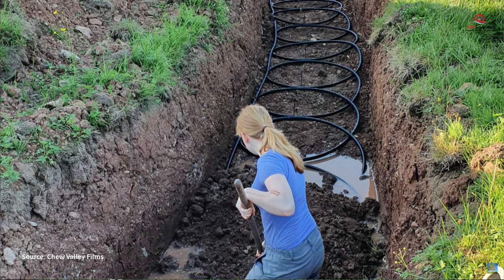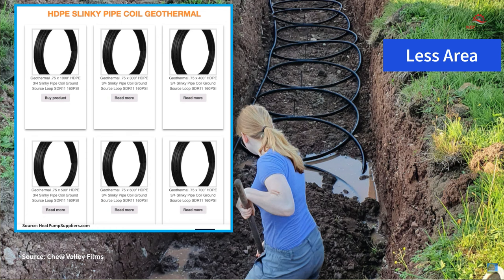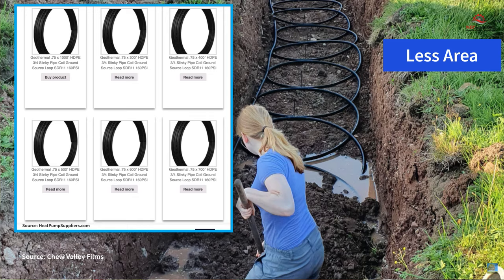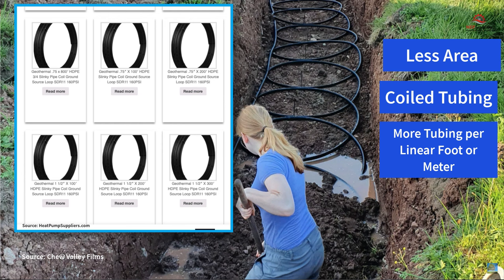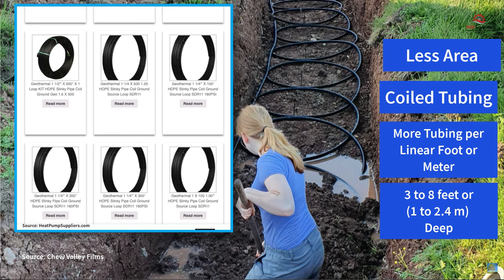The Slinky Geothermal Loop Installation: This geothermal system uses coiled tubing which allows for the use of less area by increasing the heat transferability per area used. The tubing is coiled in the trench, requiring less land area but more tubing per linear foot. The coils are laid in a horizontal trench 3 to 8 feet (1 to 2.4 meters) deep. A combination of water and antifreeze circulates through the tubing and the heat pump's heat exchanger.